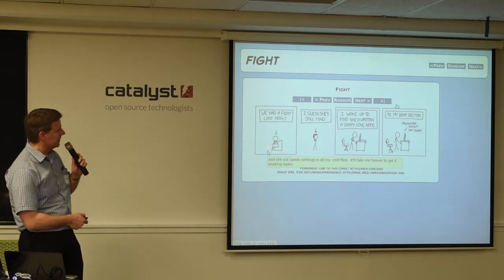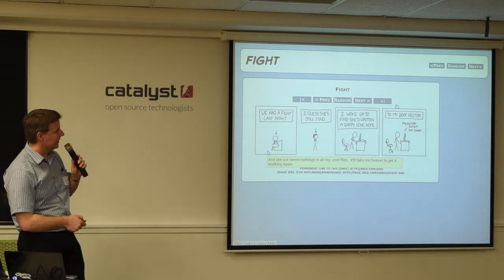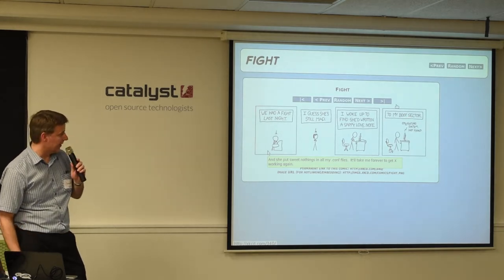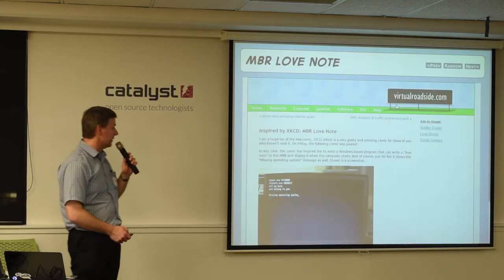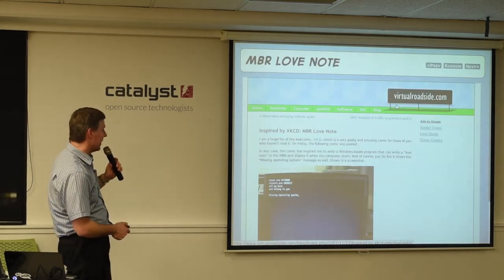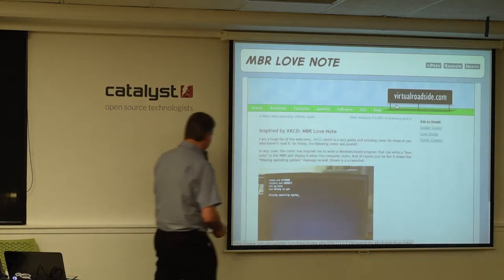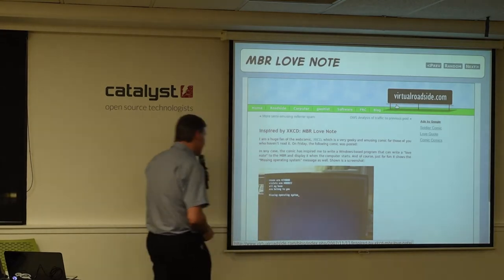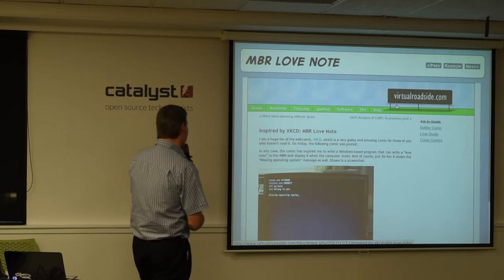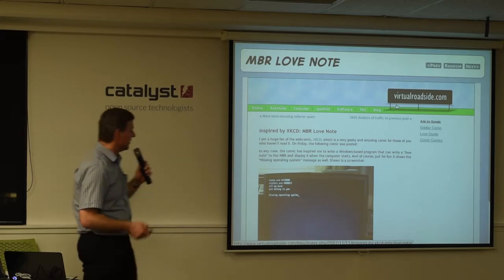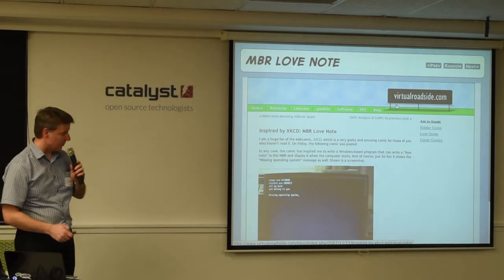This person and his partner had a fight, and he woke up to find she'd written a sappy love note on the master boot sector of his computer. This inspired someone to make a thing you can put on someone's computer, and when they try to start it up, it says: 'Roses are hex code for red, violets are hex code for violet, all of my base belong to you. Missing operating system.' They don't suggest you run it — I guess they don't want to get sued.